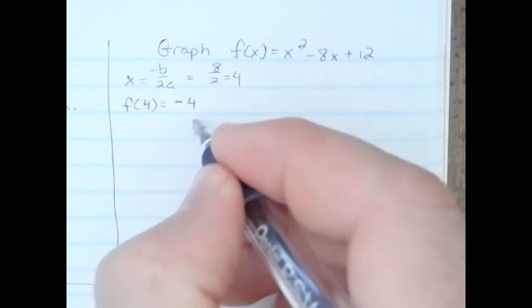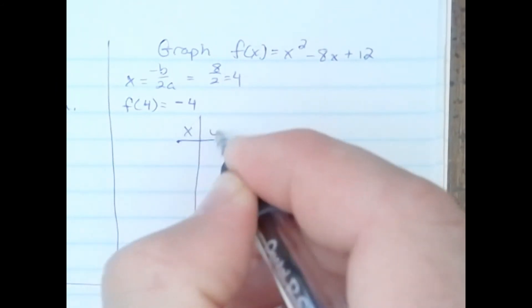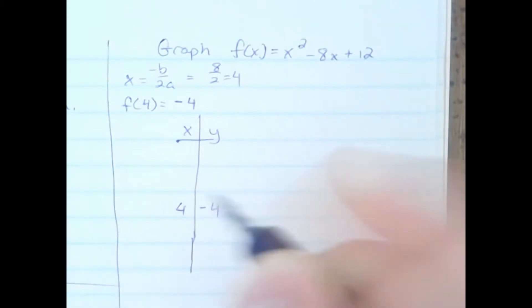So I know my x and y coordinate of my vertex. We will use that to create a t-chart. There's my vertex, and we'll choose two points around it.